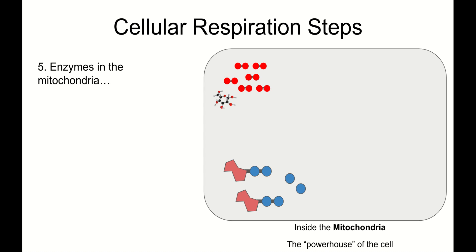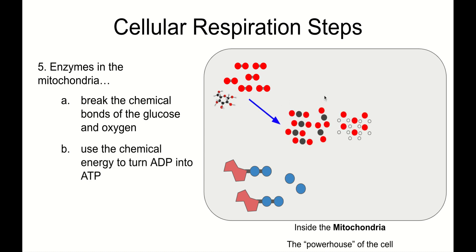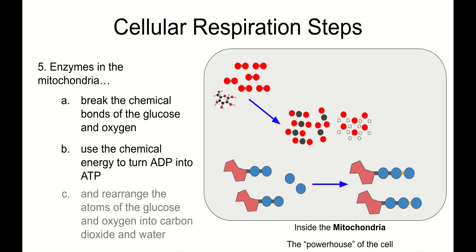Step five has three parts. Enzymes in the mitochondria: A, break the chemical bonds of the glucose and oxygen. So these molecules get separated into atoms. B, use the chemical energy that was released to turn ADP into ATP. And C, rearrange the atoms of the glucose and oxygen into carbon dioxide and water. And all that is happening in the mitochondria.